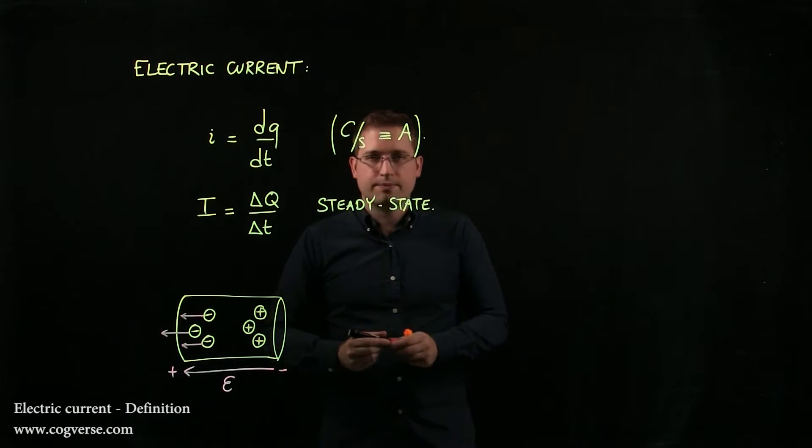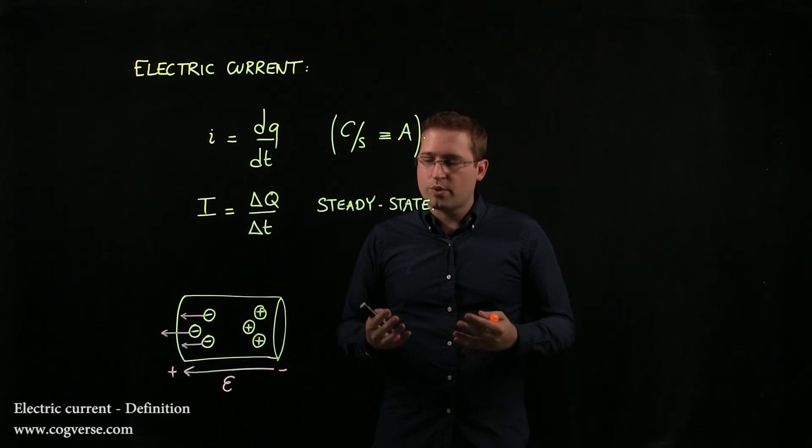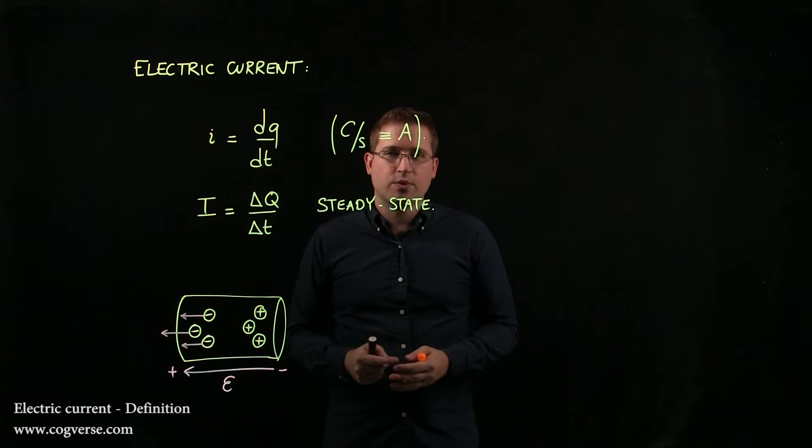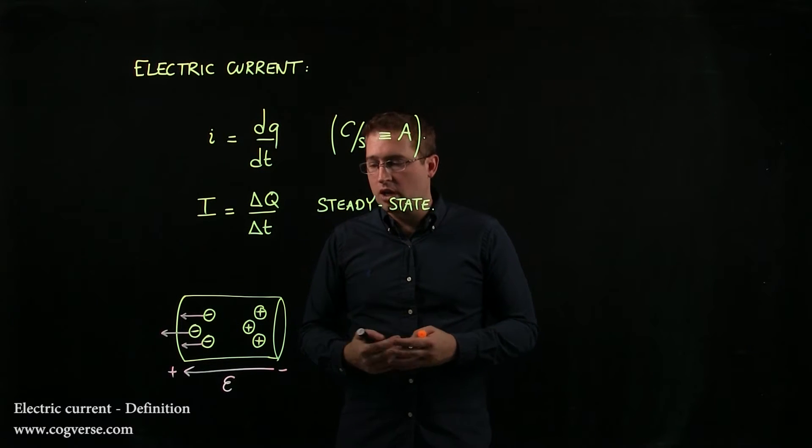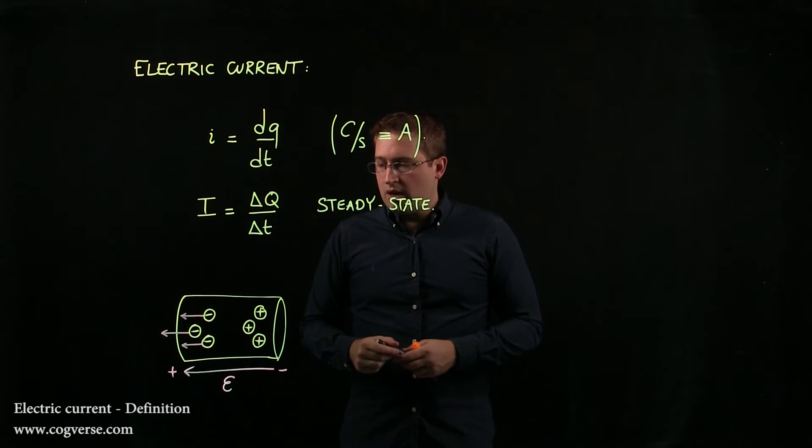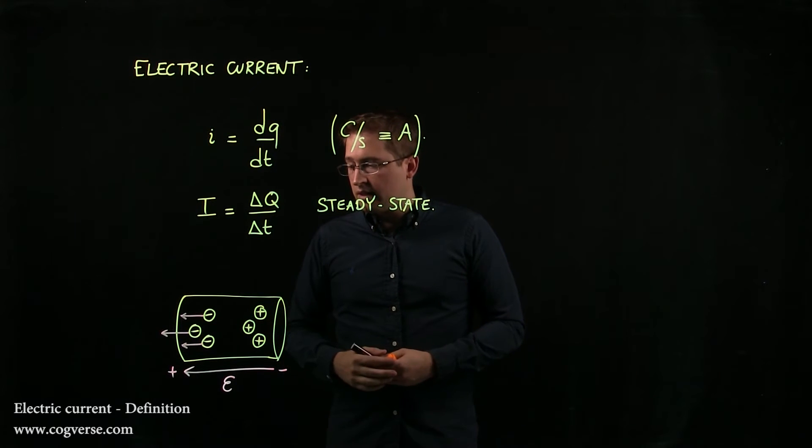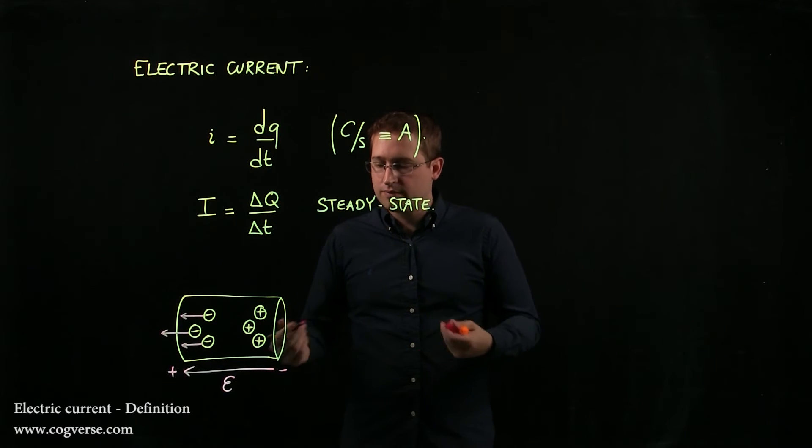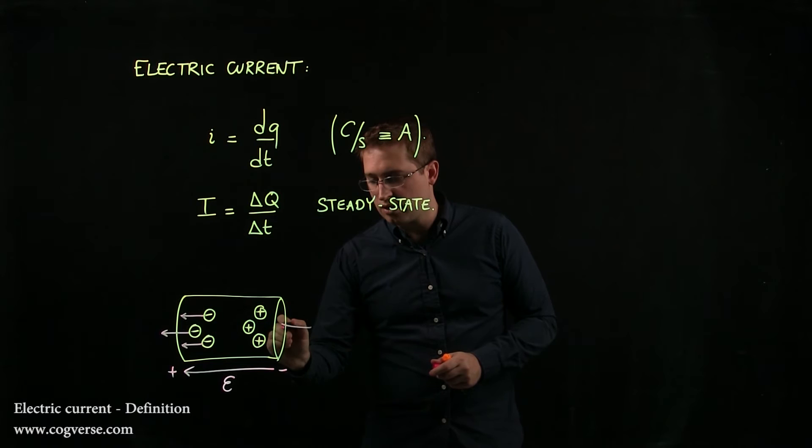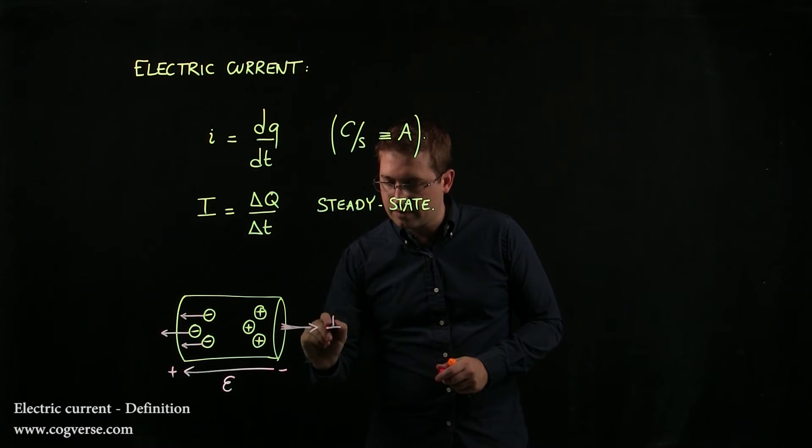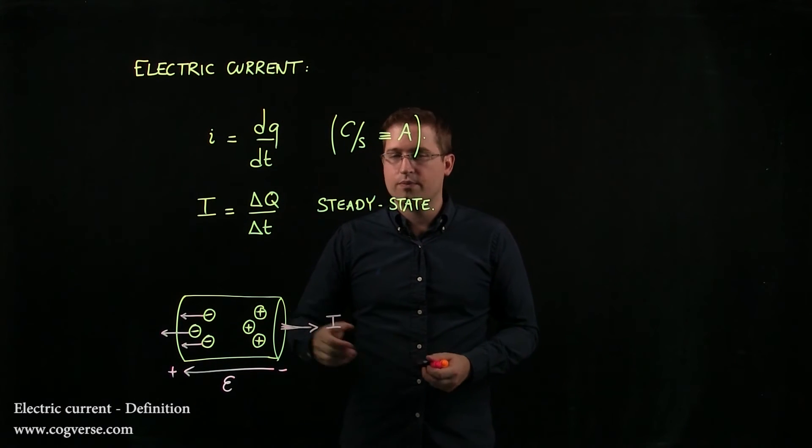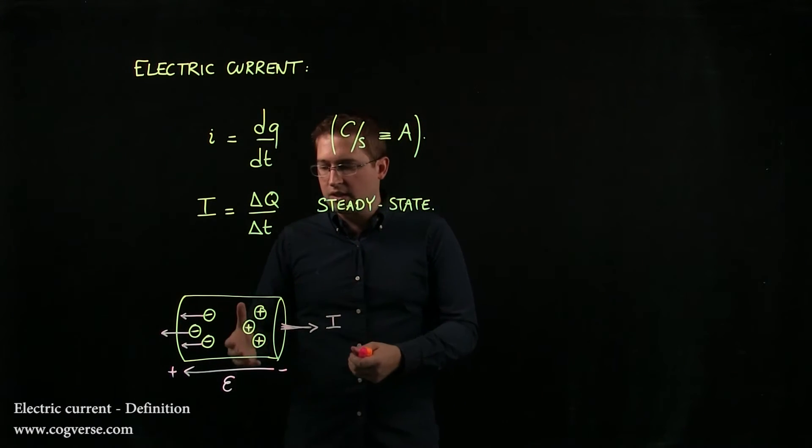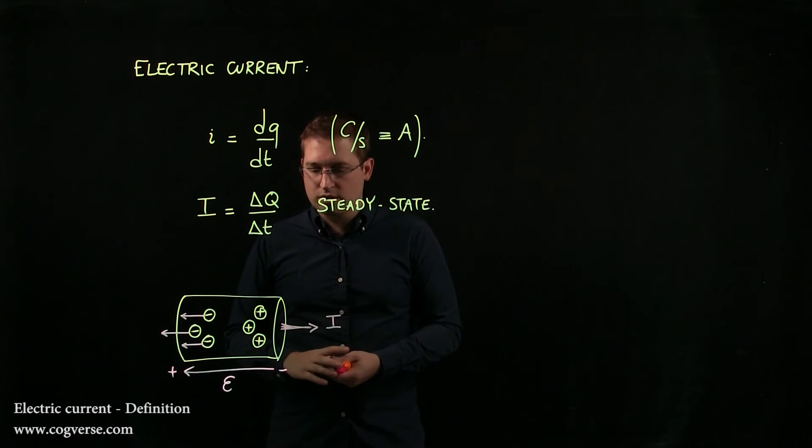So that's the reality. Historically, however, we thought that the positive charges were the guys moving, and we didn't really have a way to check our guess at that point. So even though it's not the case, historically, we decide, and it's just a convention that everyone uses, that the current is given by the motion of the positive charge, even though physically it's really because the electrons are moving.